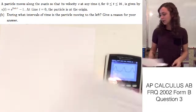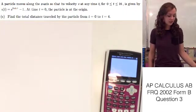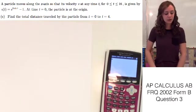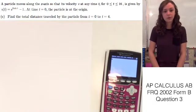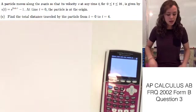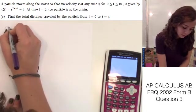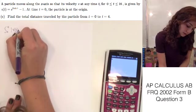So now let's go on to part c. Okay, so for part c, it asks us to find the total distance traveled by the particle from time t equals zero to time t equals four. And we know since it's asking for total distance traveled, we can just take the integral of velocity from zero to four, but we need to take the absolute value of the velocity function.